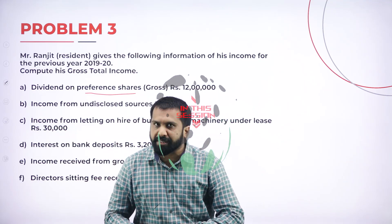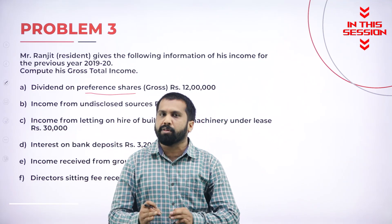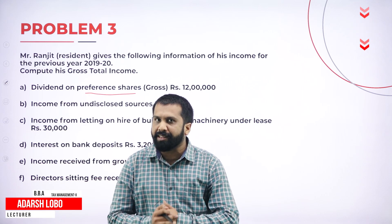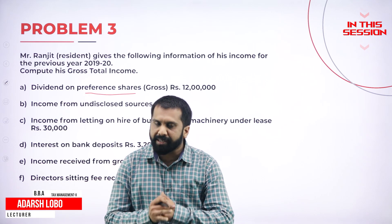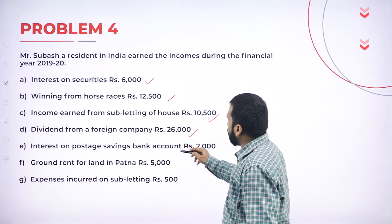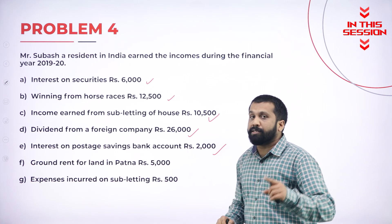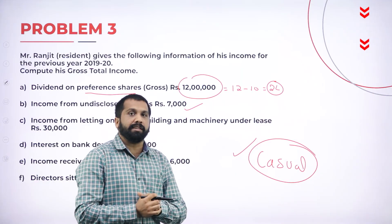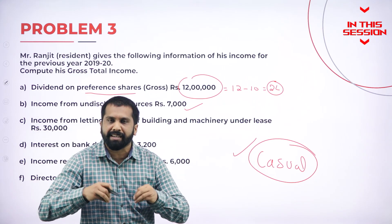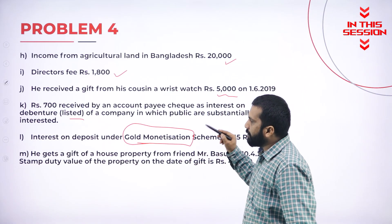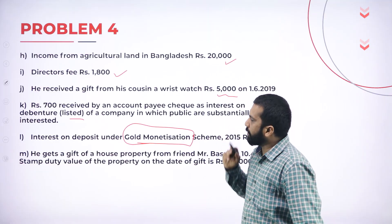Dividend from an Indian company is always exempted, but only up to 10 lakh. Interest on post office savings up to 3,500 is exempted. Casual income is unexpected income. Gold Monetization Scheme interest is exempted.